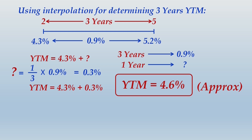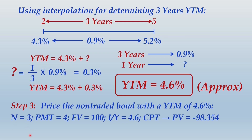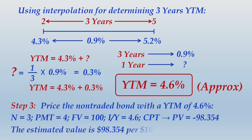Once the YTM is determined, apply the procedure for determining the price. Price the non-traded bond with a YTM of 4.6% using a financial calculator: N = 3, PMT = 4, FV = 100, I/Y = 4.6. Computing PV gives −98.354, indicating the bond's current price. The estimated value is $98.354 per $100 par value. This is the procedure for determining the price of a non-traded bond — the approach of matrix pricing.